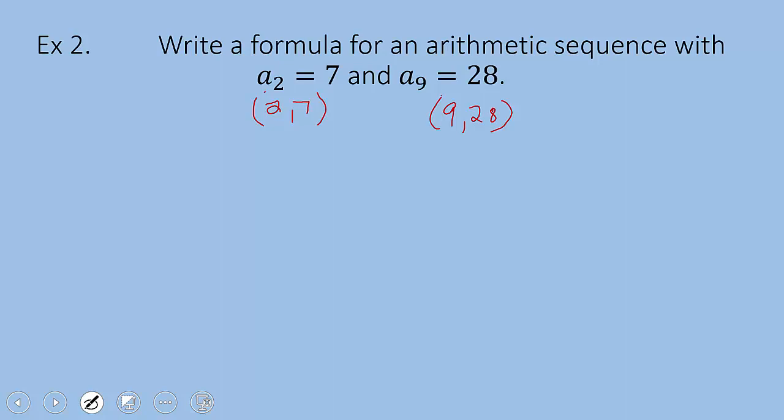So first thing, you know there's no directions here telling us what we have to do, but we should know we should find the slope between these two points. So that's exactly what I'm going to do right now. I'm going to call it d because it's the common difference. So we're going to do 28 minus 7 over 9 minus 2. That's 21 over 7 which is 3. So we know that the common difference is 3.